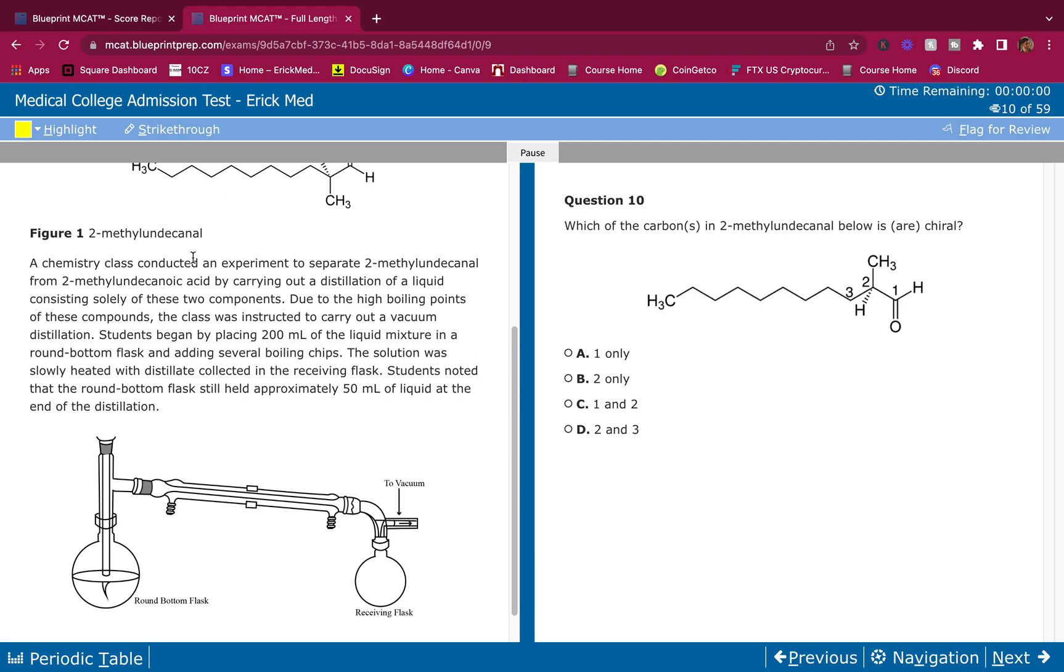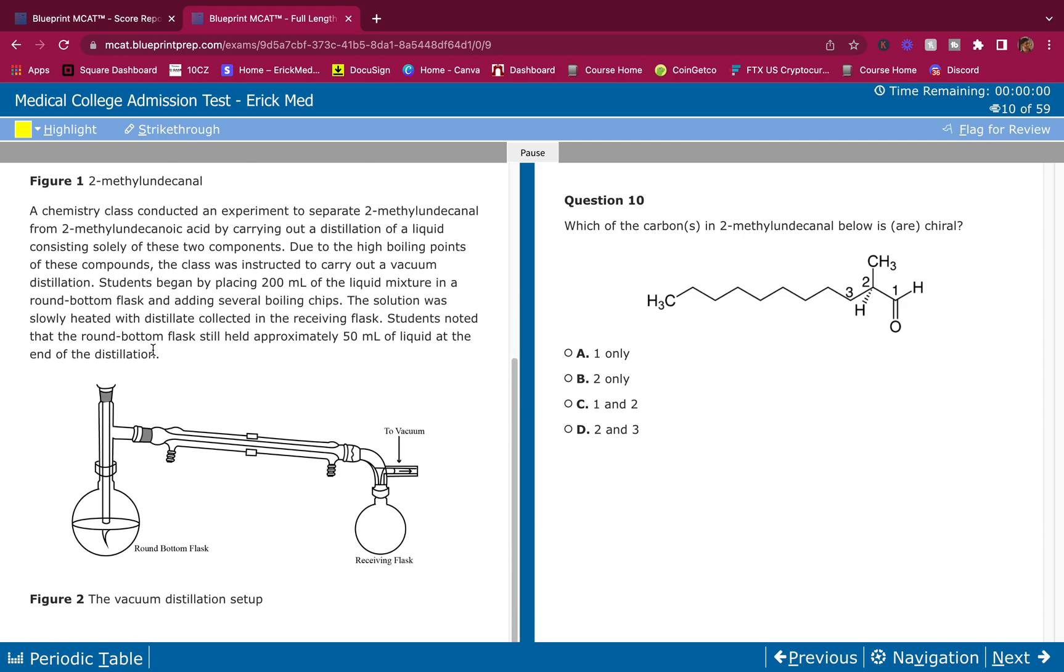Don't waste time looking at these figures - only look at the figures when the question asks for it. A chemistry class conducted an experiment to separate 2-methylundecanal from 2-methylundecanoic acid - note the difference, one's an aldehyde and one's a carboxylic acid - by carrying out a distillation of a liquid consisting solely of these two components.